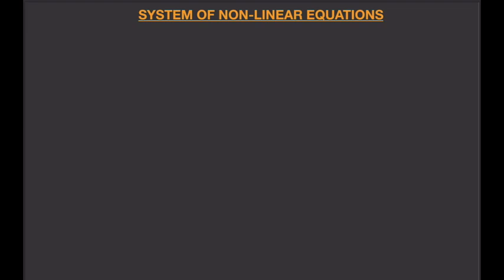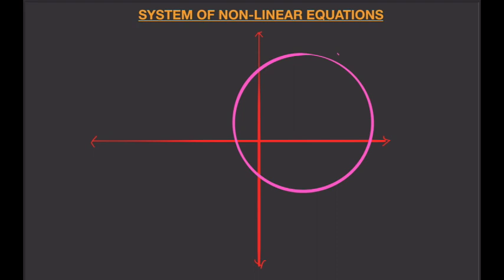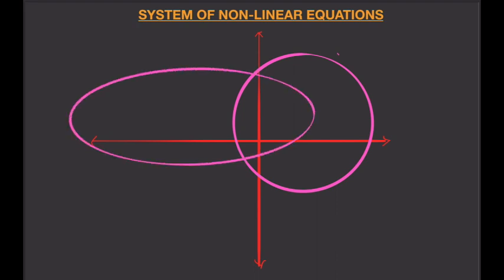Let me show you what this looks like graphically. Let me draw a coordinate plane. Let's say that my first equation describes a circle and the other one describes an ellipse. In that case, I have two solutions — that point and that point. So I have two solutions.